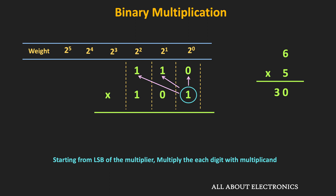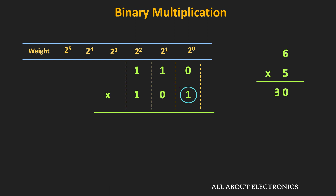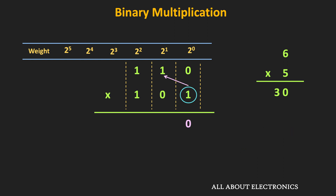So first, let us multiply this 1 with the 0. The weight of both 1 and 0 is equal to 2 to the power 0. And this 1×0 is equal to 0. If we multiply their weights, it will be equal to 2 to the power 0. Therefore, we will place the result in the 2^0 column. Likewise, let us multiply this 1 with the 1. This 1×1 = 1, and if we multiply their weights, the result will be equal to 2 to the power 1. Therefore, we will place the result in the 2^1 column.